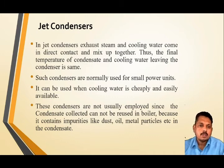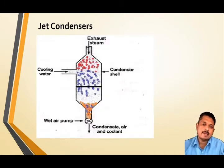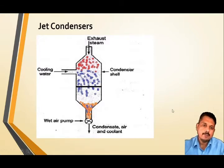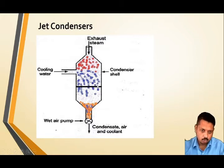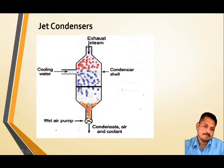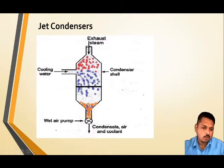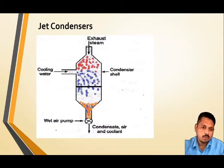Here in this diagram, you can observe exactly the working of a jet type condenser, in which the steam and cooling water are mixed with some baffling or barricading to reduce the flow of water coming into the condensate. They mix together and in some time the steam is converted into hot water, which is later cooled. This is the simplest way of converting steam into water.